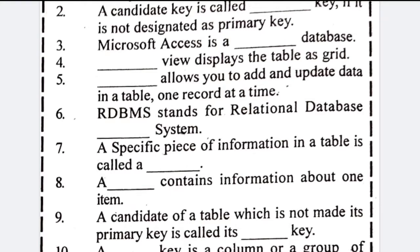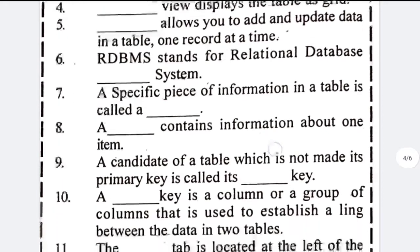This view displays the table as a grid — datasheet view. This view allows you to add and update data in a table one record at a time — form view. DBMS stands for relational database management system. A specific piece of information in a table is called a value.